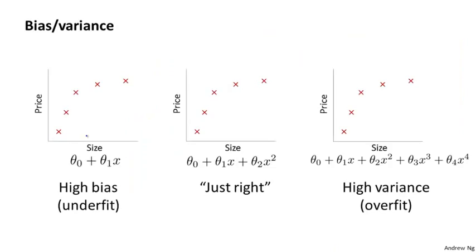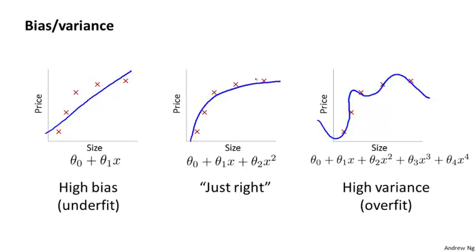You've already seen this figure a few times: if you fit a simple hypothesis like a straight line, that underfits the data. If you fit a too-complex hypothesis, it might fit the training set perfectly but overfit the data. A hypothesis of some intermediate level of complexity — say a degree-two polynomial, not too low and not too high — is just right and gives you the best generalization error of all these options. Now armed with the notion of training, validation, and test sets, we can understand bias and variance a little bit better.